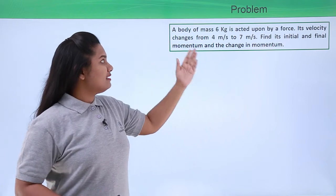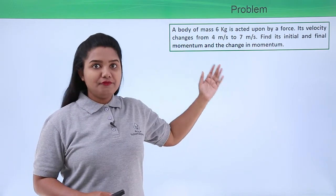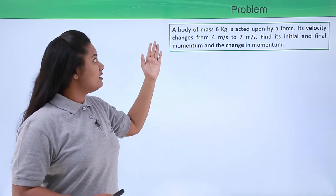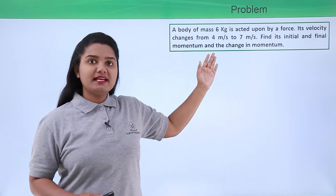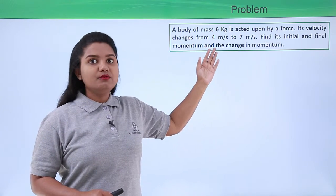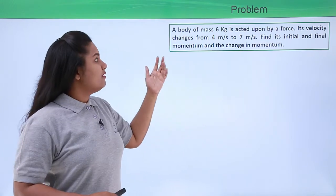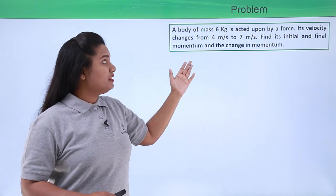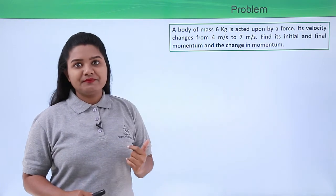A body of mass 6 kg is acted upon by a force. Its velocity changes from 4 meters per second to 7 meters per second. Find its initial and the final momentum and the change in momentum.